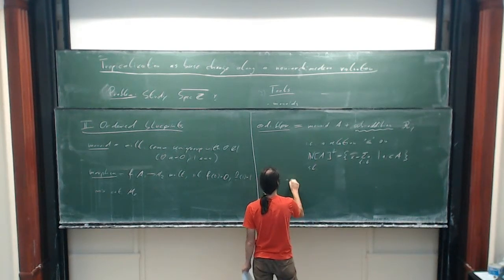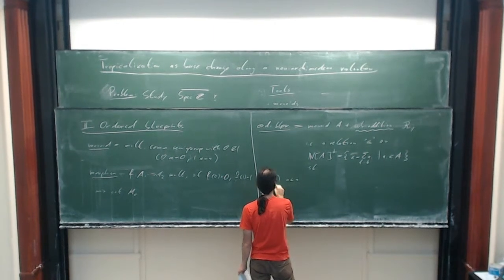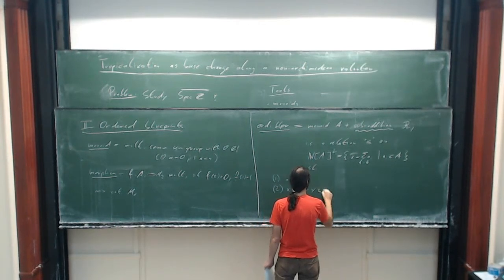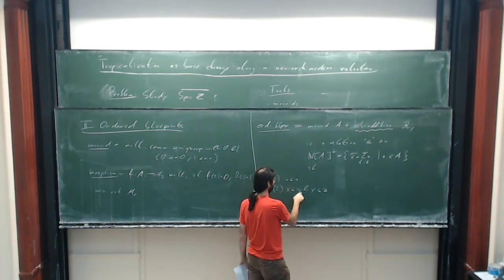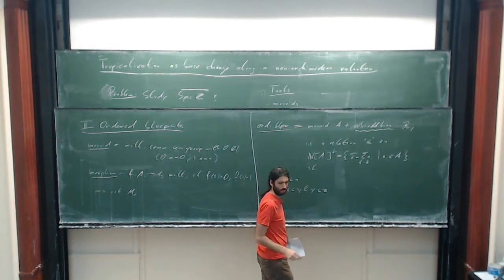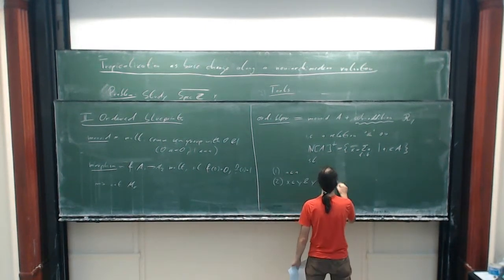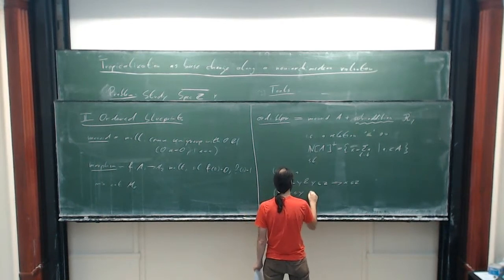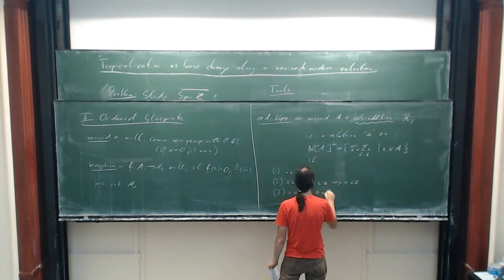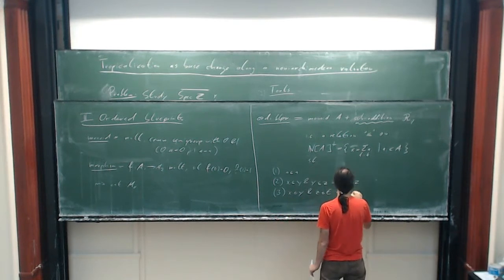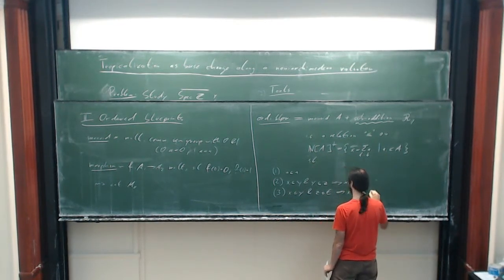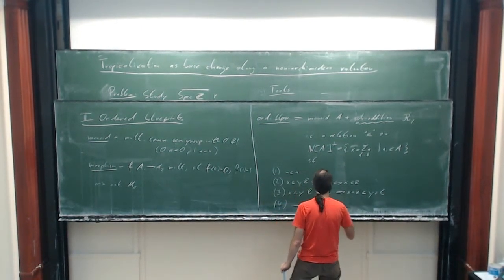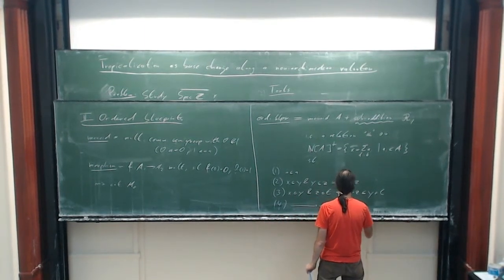This satisfies a series of axioms. First, it's reflexive. Second, it's transitive. I always use A, B, C, D for elements in the monoid, and X, Y, Z for elements of the semi-ring. Third, it's additive: if we have two relations, this implies we can add elements on the left-hand side and compare to the sum on the right-hand side. And it's also multiplicative: products compare in a given way.